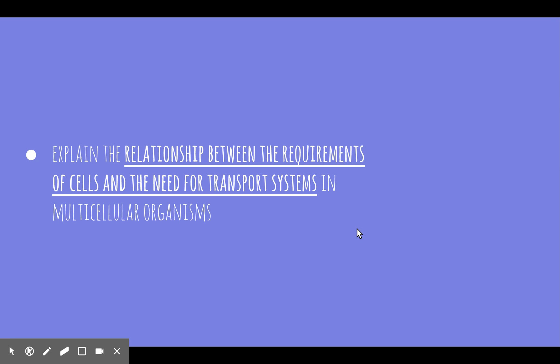Welcome to the next video in the Patterns in Nature topic. Today we'll be looking at the dot point: explain the relationship between the requirements of cells and the need for transport systems in multicellular organisms. It's an explain dot point so we need to look at cause and effect. We've been looking at how surface area to volume ratio and surface area of reactants changes the way that reactions can take place, or increases the rate of diffusion or rate of reaction.